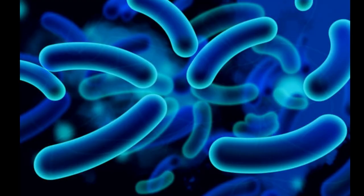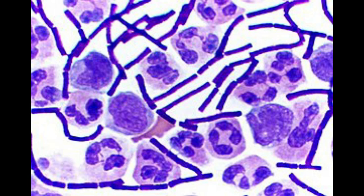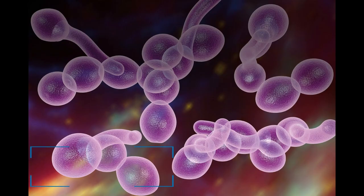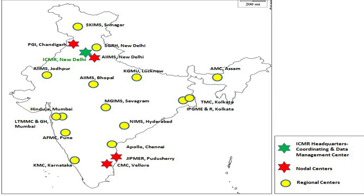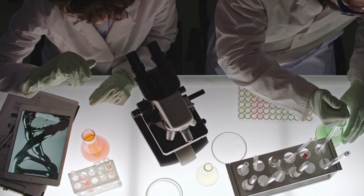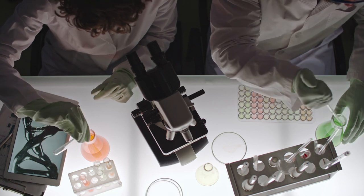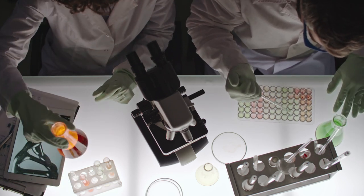Number five, gram positives — that is staphylococci and enterococci — including MRSA, that is methicillin-resistant Staphylococcus aureus; and number six, fungal pathogens and yeasts like Candida etc. There are 16 regional center labs in the network where data from 16 tertiary care hospitals across the country are collected and analyzed.